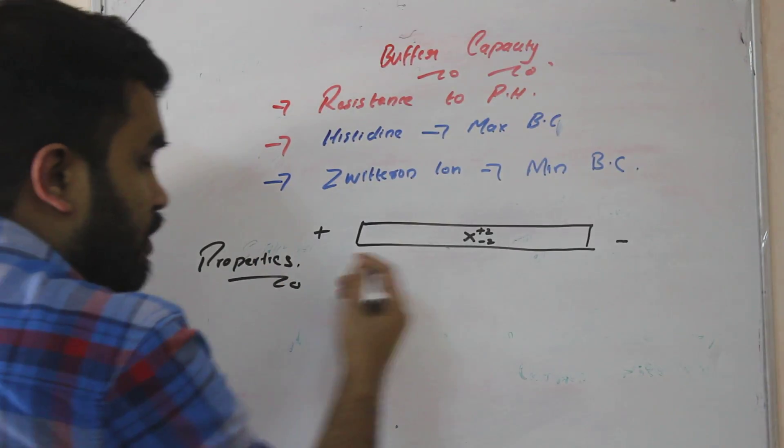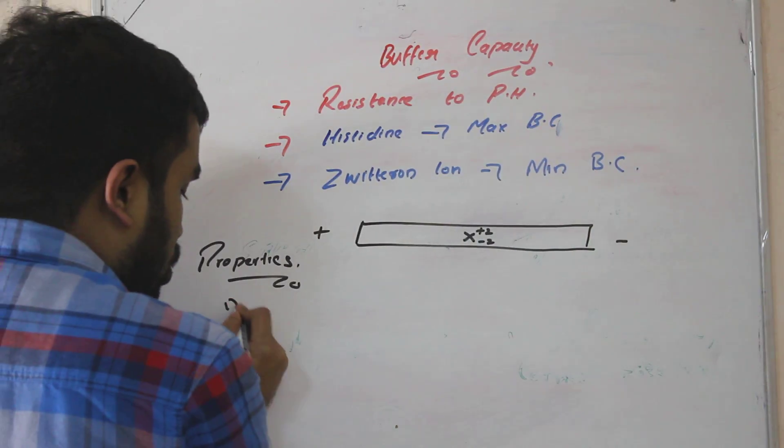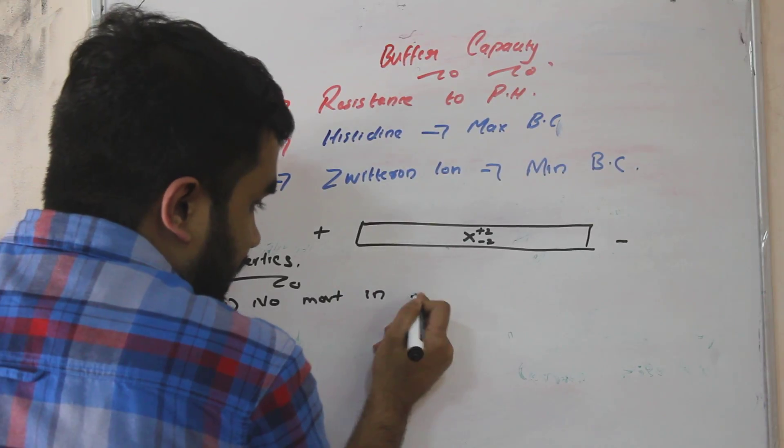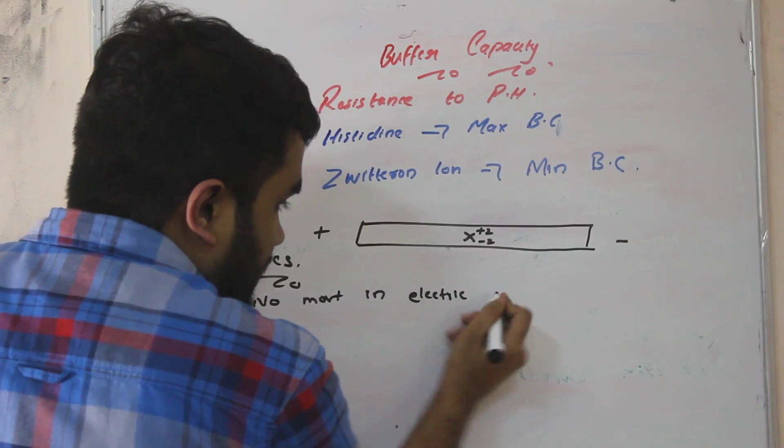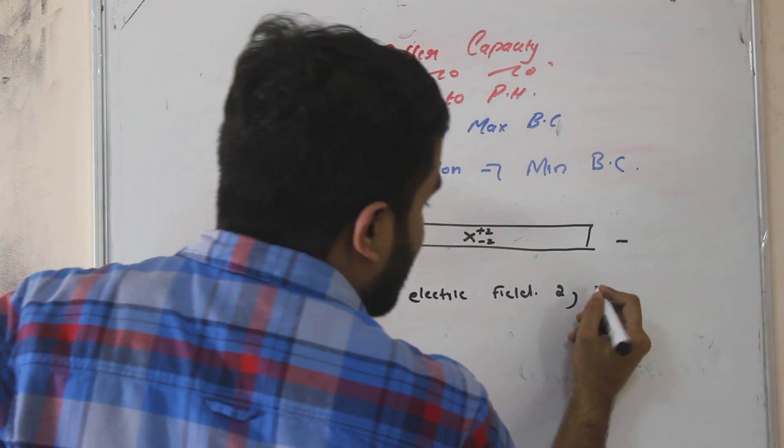So if you give any electric current, will it move? No, it won't move because it doesn't have any charge. So no movement in electric field. That is the first point. Second, we have only discussed here, it is having minimum buffer capacity.